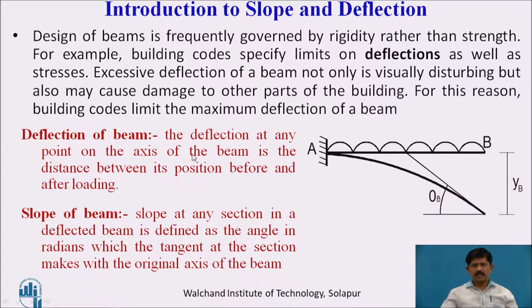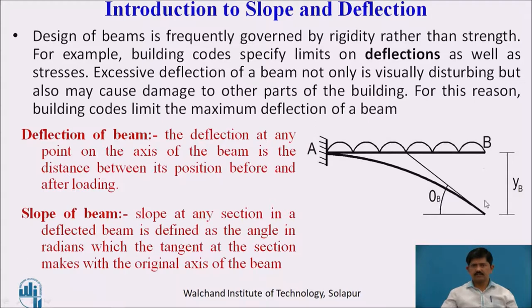The deflection at any point on the axis of a beam is the distance between its position before and after loading. When the beam is initially straight and after loading it gets deflected, the distance between the initial and deflected position is the deflection of the beam. It is greater at the free end, smaller towards the fixed end, and zero at the fixed end.